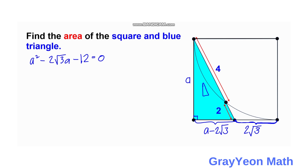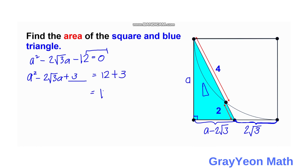We solve this quadratic by completing the square. Copying the first two terms: a² − 2√3·a, we add (√3)² = 3 to both sides. On the left we get a perfect square trinomial: (a − √3)². On the right, −12 + 3 = −9, but moving −12 to the right gives 12, then adding 3 gives 15.